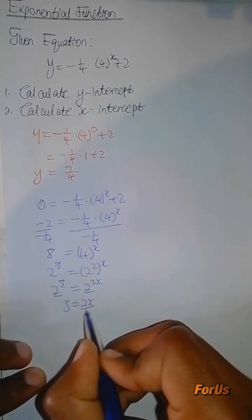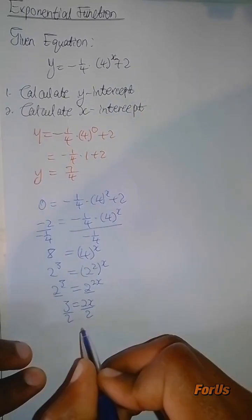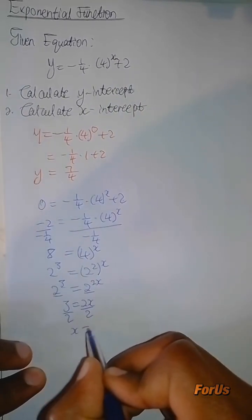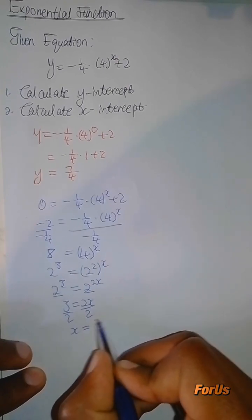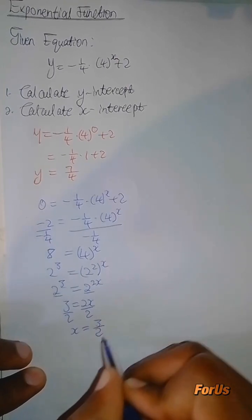You're going to divide both sides by 2. Then the value for x-intercept is going to be 3 divided by 2.